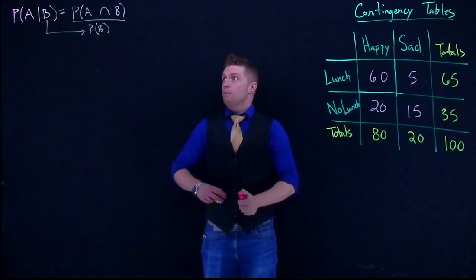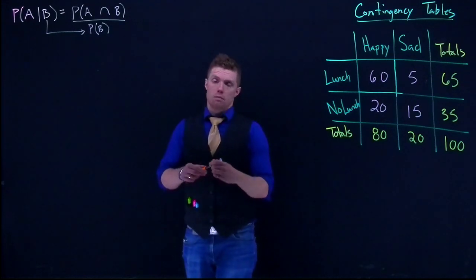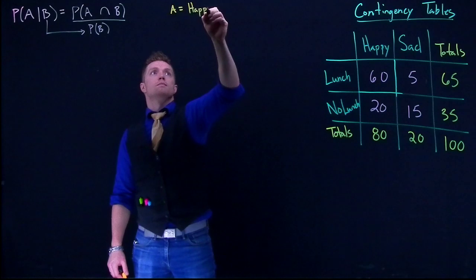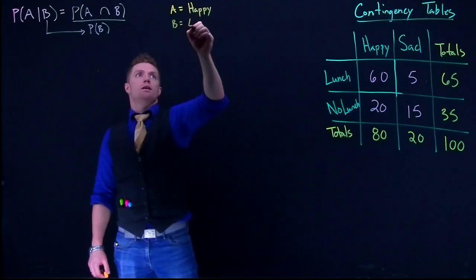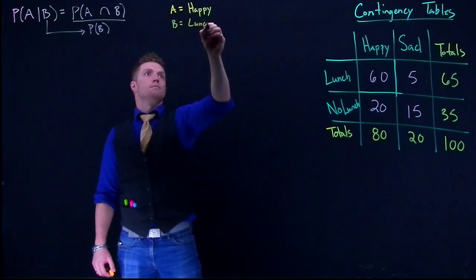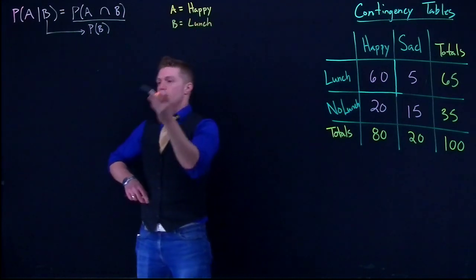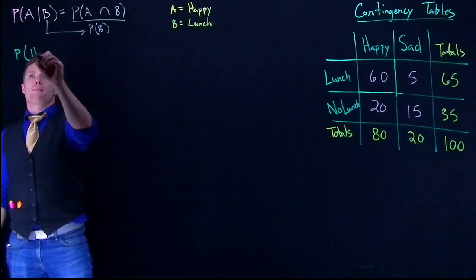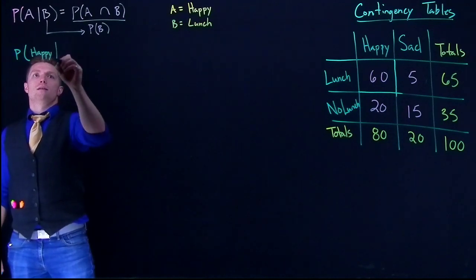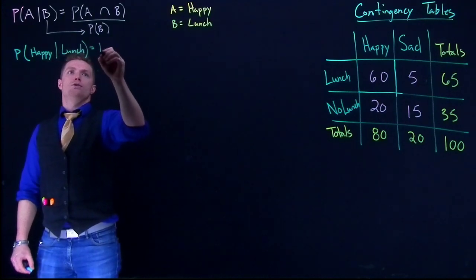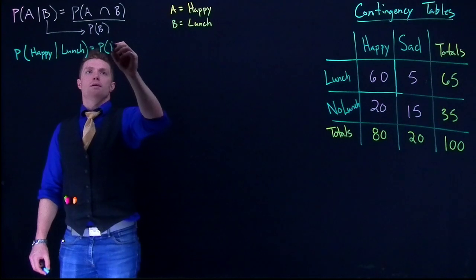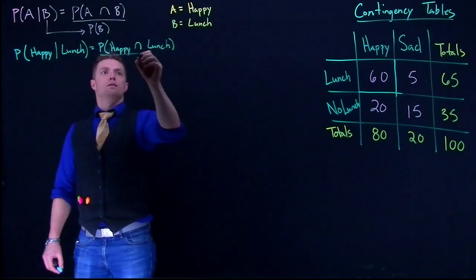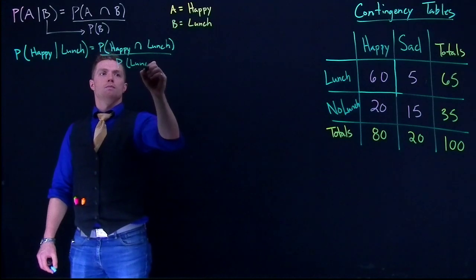We need to establish what is our event A and what is our event B. Event A is going to be equal to being happy and event B is going to be if they ate lunch. So we've got our A and our B established. What we're really saying is the probability of happy given lunch equals the probability of happy intersect lunch divided by the probability of lunch.